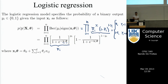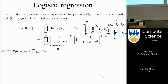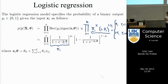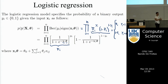We have a likelihood — but how do we get a cost function from it? Recall that in linear regression, our likelihood was Gaussian, and we took minus the log to get the least squares cost function. There's always a simple relation between probabilities and cost functions: we take the negative log of the probability, and that gives us the cost function we need to optimize.